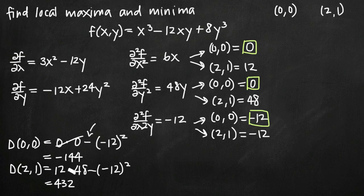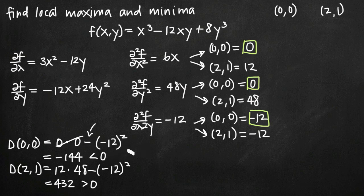We examine whether d is positive, negative, or zero. If d equals zero, the test is inconclusive. Neither of our values is zero. If d is less than zero — as with our critical point (0,0) where d equals negative 144 — then that critical point is a saddle point: neither a local maximum nor a local minimum. So (0, 0) is a saddle point.